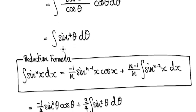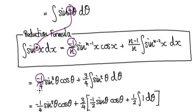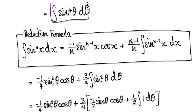Let's use the reduction formula. Our n is 4, so applying the reduction formula with n=4: we get n minus 1 over n, which is 3 over 4, times sine to the power of 3, times cos theta, plus then (n-1)/n times the integral of sine to the power of n-2, which is sine squared. So using the reduction formula, this boils down to the next expression.